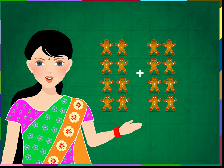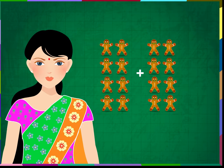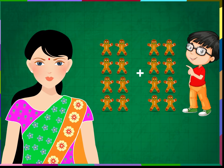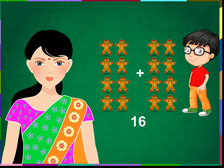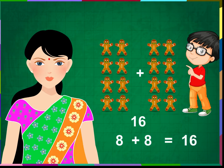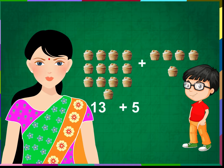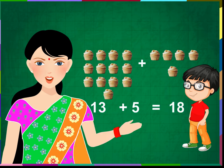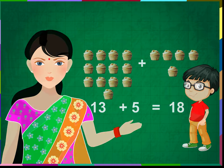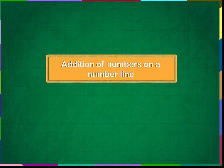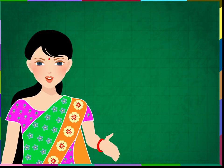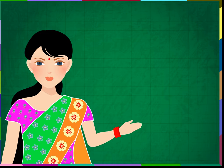Can you add these objects and give the sum? Eight plus eight: eight and eight make 16. Eight plus eight is equal to 16.